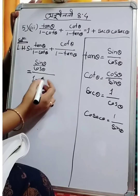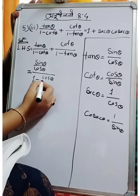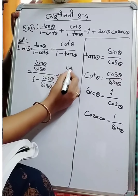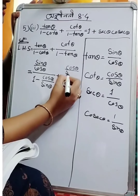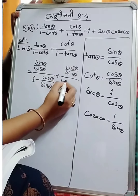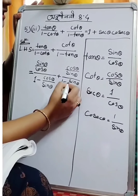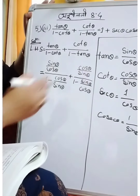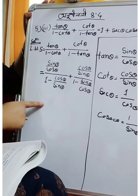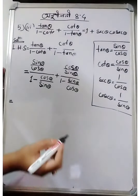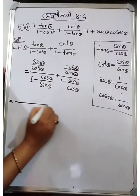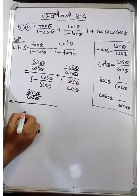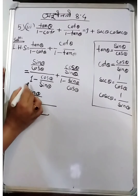OK, keep it like that. 1 minus cos theta — we take cos theta by sin theta. Last, cos theta — we take cos theta by sin theta. And 1 minus 10 theta, what do we do? 10 theta is sin theta by cos theta. And 1 minus 8 theta by sin theta. And 2 minus 8 theta by sin theta.